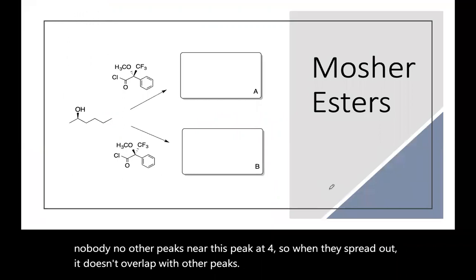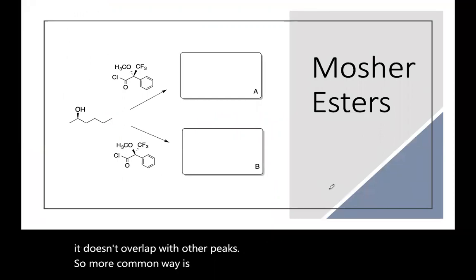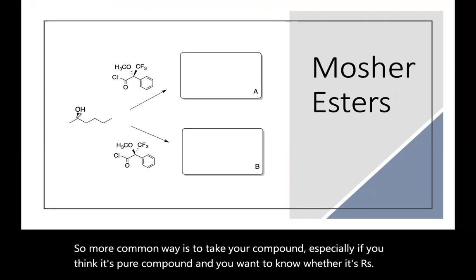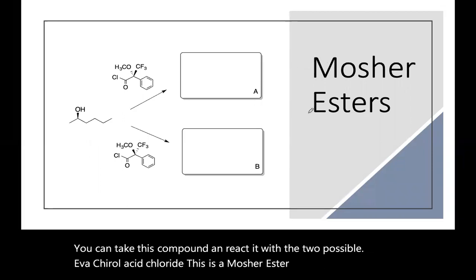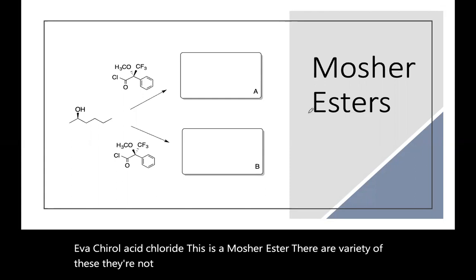So a more common way is to take your compound, especially if you think it's pure compound and you want to know whether it's R or S, you can take this compound and react it with the two possible enantiomers of a chiral acid chloride. This is a Mosher ester, there are a variety of these, they're not all Mosher esters, that was the name of the first one, but it's an esterification or amidification process.